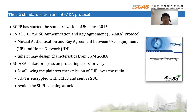First, I would like to introduce the 5G Standardization and 5G-AKA protocol. The 3GPP consortium has started the standardization of 5G since 2015. In TS 33.501, the 3GPP consortium has proposed the 5G Authentication and Key Agreement protocol, that is 5G-AKA. It enables mutual authentication and key agreement between user equipment and home network, inheriting many design characteristics from 3G or 4G AKA. It also makes progress on protecting user's privacy by disallowing the plaintext transmission of SUPI over the radio, where SUPI is the user's identifier. In particular, SUPI is encrypted with ECIES and sent as a concealed SUPI, or SUCI, which avoids the SUPI catching attack.